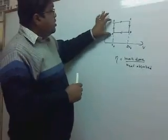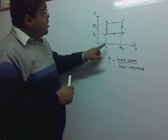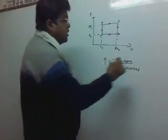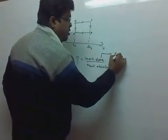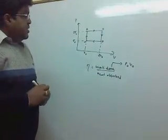So area of this will be, this length is P₀, this length is V₀. So work is P₀V₀. So next, our task is to find how much heat is absorbed by the system.